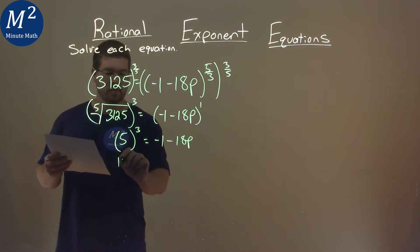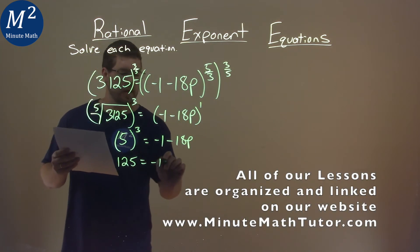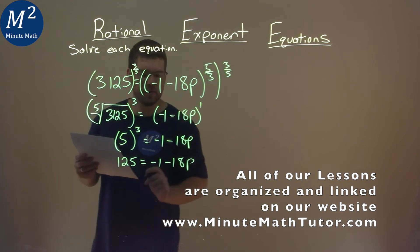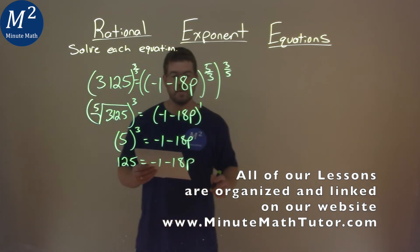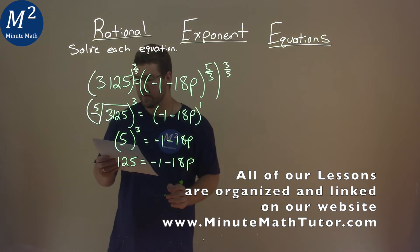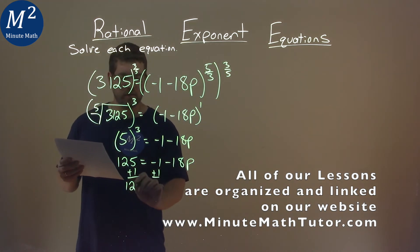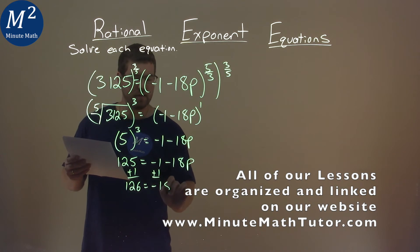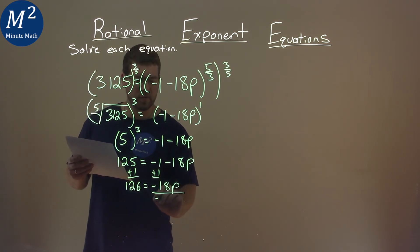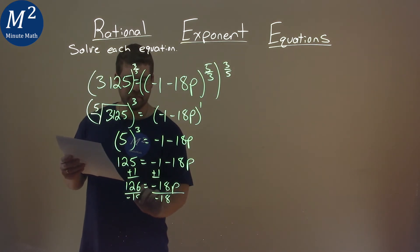Five to the third power is 125, and this looks familiar now. We have it equal to negative one minus 18p, and we're just solving like we normally do. We add one to both sides. We have 126 now equals negative 18p. Divide both sides by negative 18.